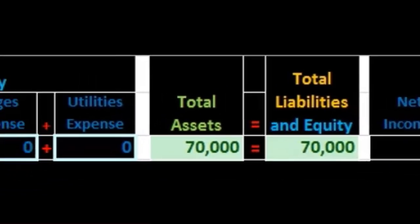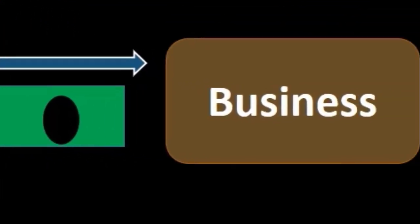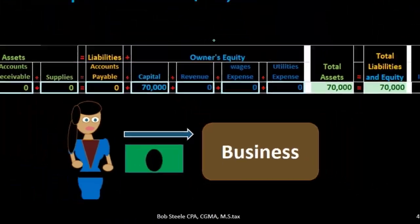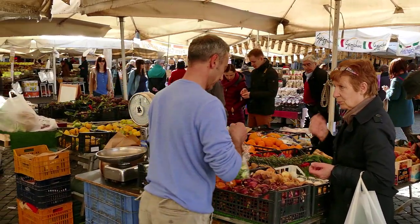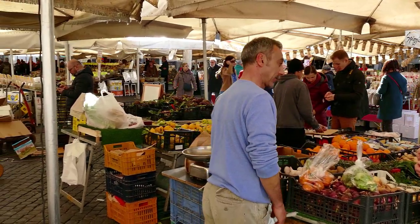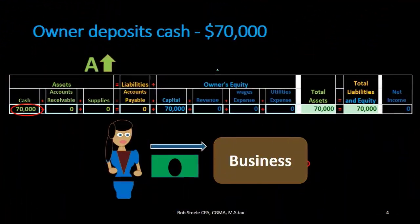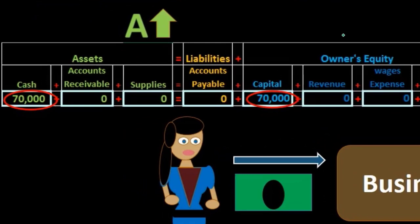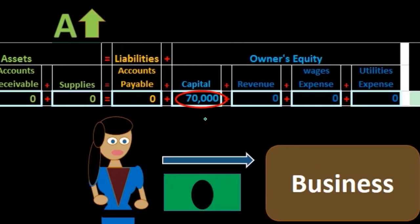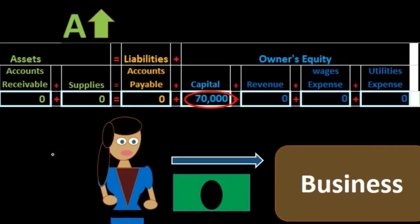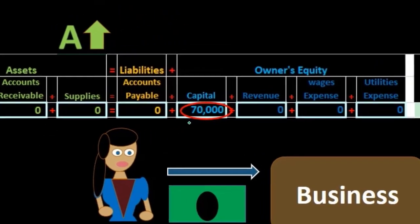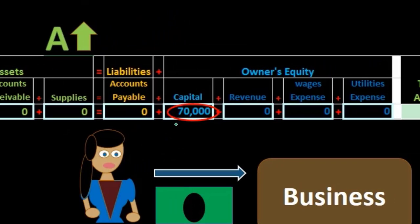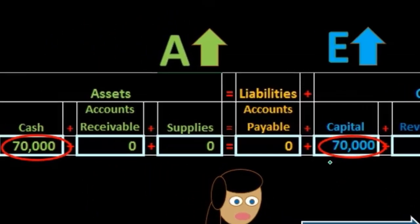When dealing with the owner depositing money, it makes sense to think of the owner's equity or capital account. For a corporation it would be the selling of stock and stockholders' capital. In this case it's the capital account. We have $70,000 within the capital account — we know it's increasing because cash went up, and if the other account is on the other side of the equal sign it too must be going up.